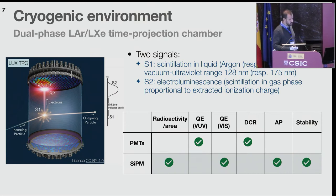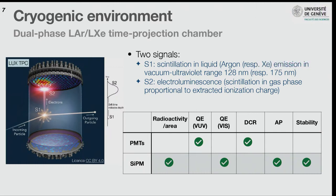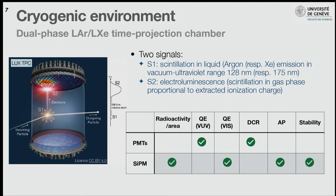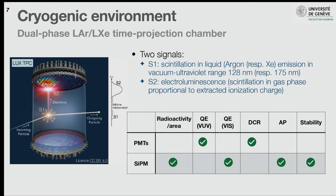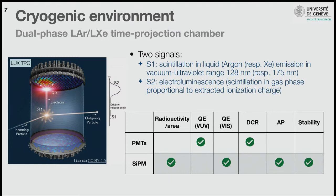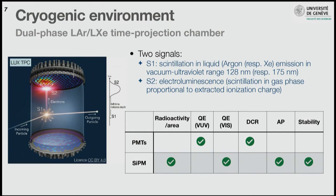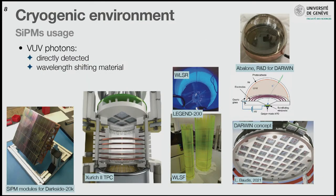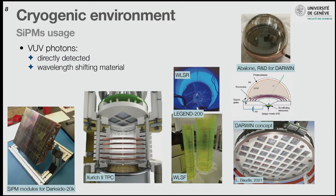The amplitude ratio of the two signals tells you what type of particle was detected. This is very useful for rare event detection. PMTs have been the dominant technology here, mainly due to their excellent quantum efficiency in VUV and very low DCR. Silicon PMs represent very nice features for this application, especially low radioactivity per area, which is very desirable for these experiments.